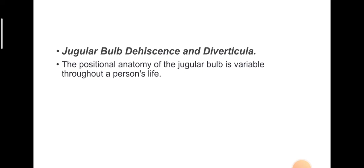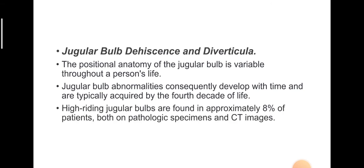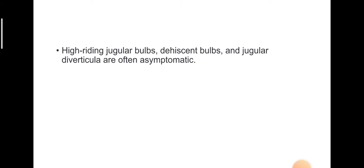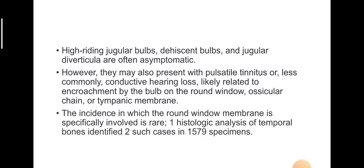Jugular bulb dehiscence: the positional anatomy of the jugular bulb is variable and jugular bulb abnormalities are typically acquired by the fourth decade of life. High-riding jugular bulbs are found in approximately 8% of patients. Dehiscent jugular bulbs and jugular bulb diverticula occur at a rate of about 2.6%. These may present with pulsatile tinnitus or less commonly conductive hearing loss, likely related to encroachment by the bulb on the round window, ossicular chain, or tympanic membrane. The incidence in which the round window membrane is specifically involved is rare — histologic analysis of temporal bone identified only two such cases in 1,579 specimens.